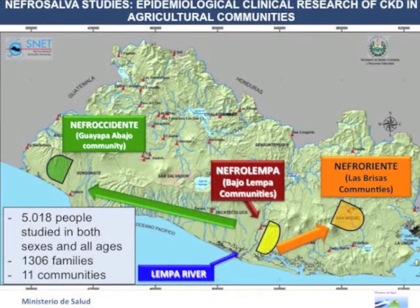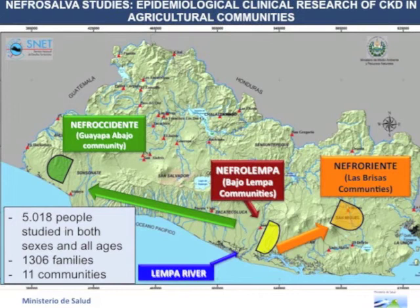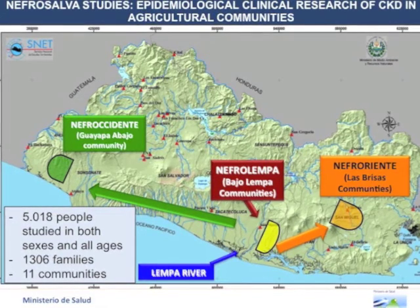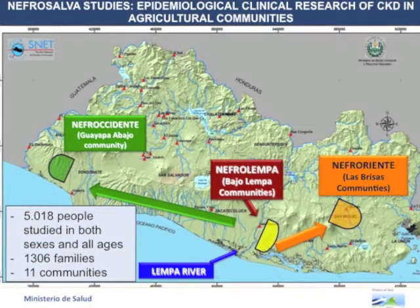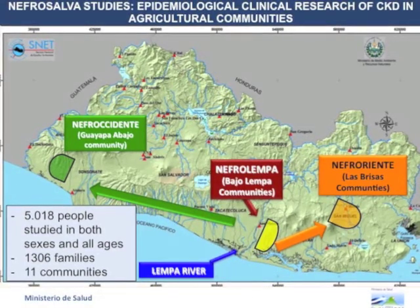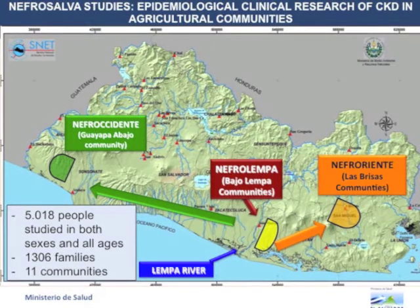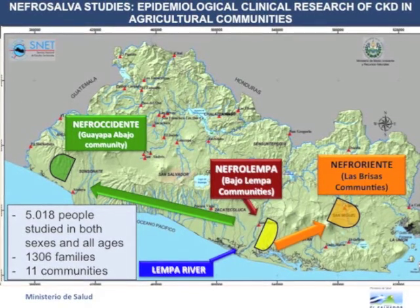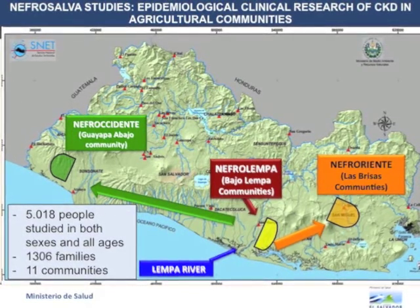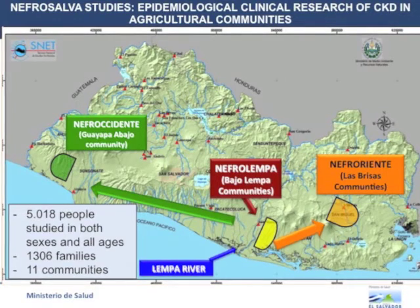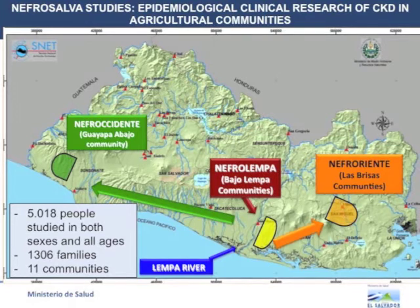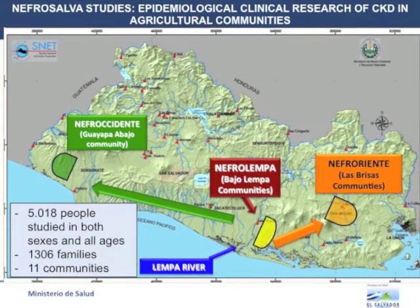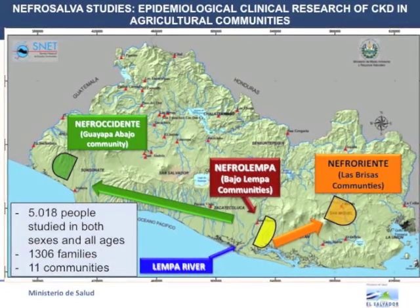The Nefrosalva studies consist of epidemiological and clinical research of CKD in agricultural communities, including: Nefrolempa in Bajo Lempa communities, Nefro Oriente in Las Brisas communities, and Nefro Occidente in Guayapa Bajo community. Over two years, we studied 5,018 people of both sexes and all ages — 103 families in 11 communities.